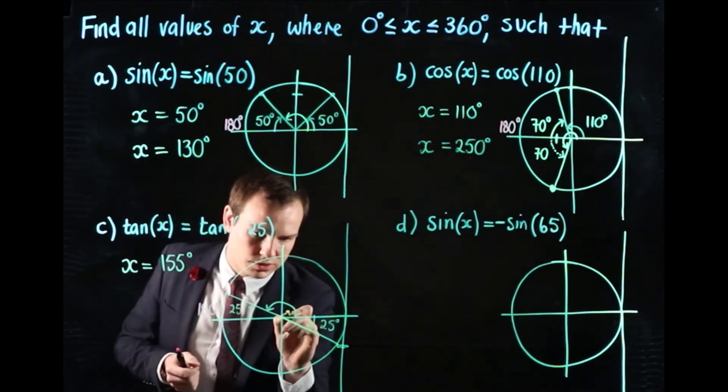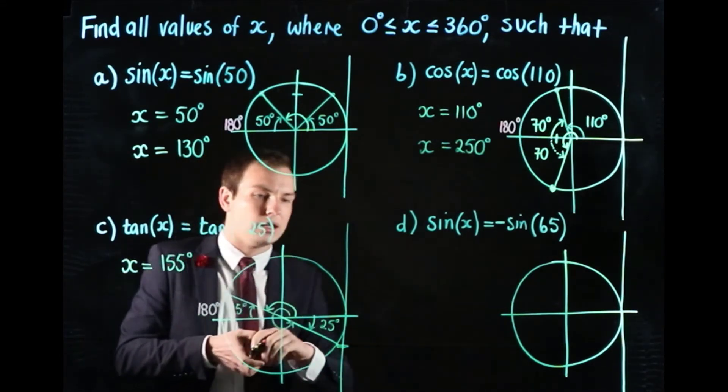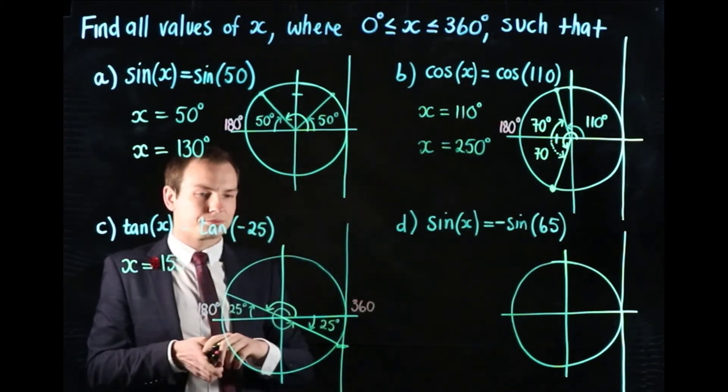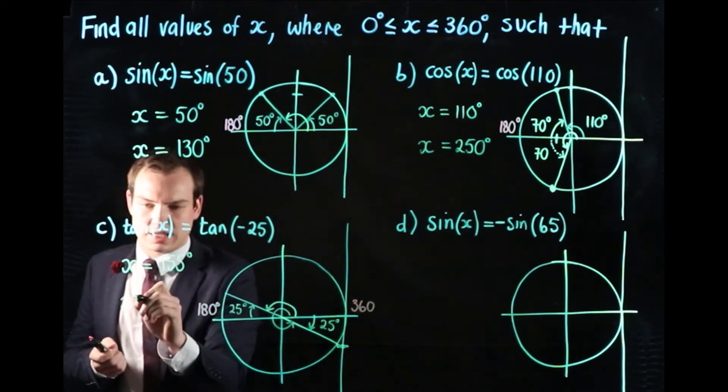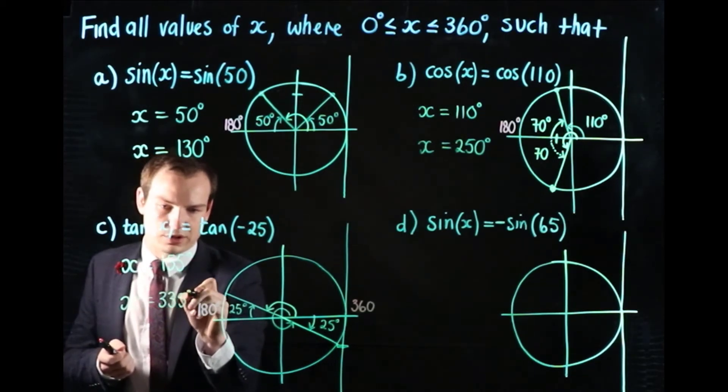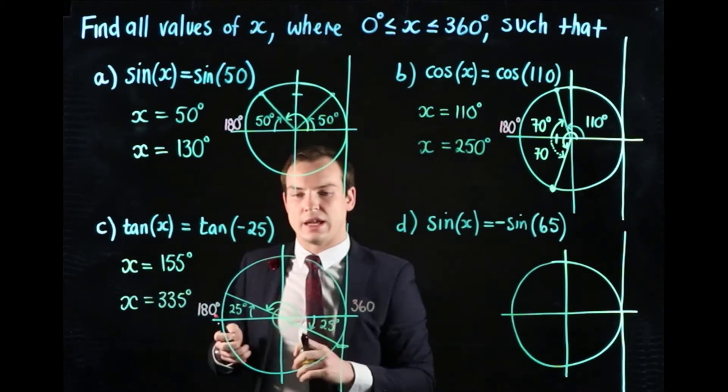Then if we also took an angle that went all the way around to here, this is 360 degrees minus 25. When we take 25 off that, we'll get x equals 335 degrees. So those are the two solutions for part c of this question.